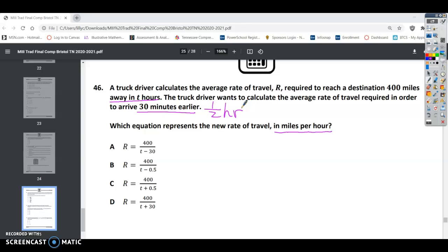All right, so which equation represents the new travel rate? Well, we can go ahead and rule out the two that have 30 in the equation, because again, it says it wants it in miles per hour. So that means we've got B or C.